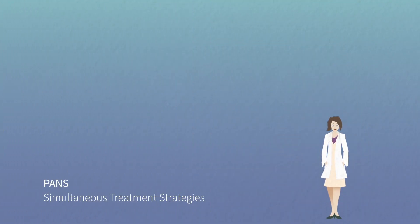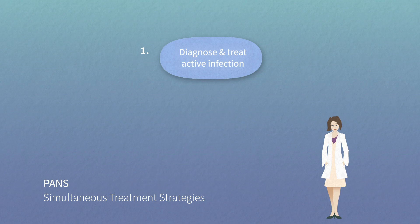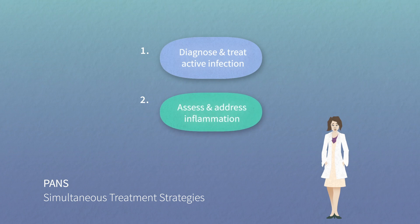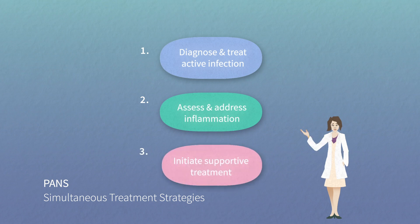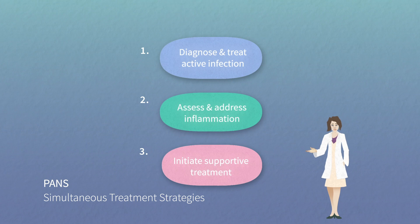PANS treatment integrates three primary strategies. One: identification and treatment of active infection as appropriate. Two: assessment and modulation of inflammation as appropriate. And three: initiation of supportive behavioral, cognitive behavioral, and if needed, pharmacologic treatment in order to facilitate workup, address psychiatric symptoms, optimize family behavior in response to symptoms, and decrease suffering.